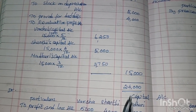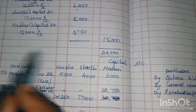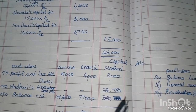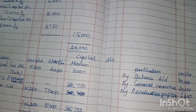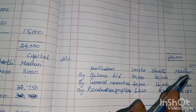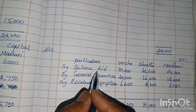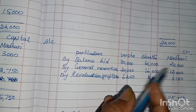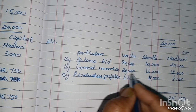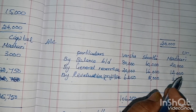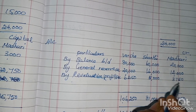Next, prepare the capital account. On the credit side: opening capital balances are ₹80,000, ₹60,000, and ₹20,000 respectively. General reserve is credited as ₹20,000, ₹16,000, and ₹12,000. Revaluation profit credited as ₹6,250, ₹5,000, and ₹3,750.